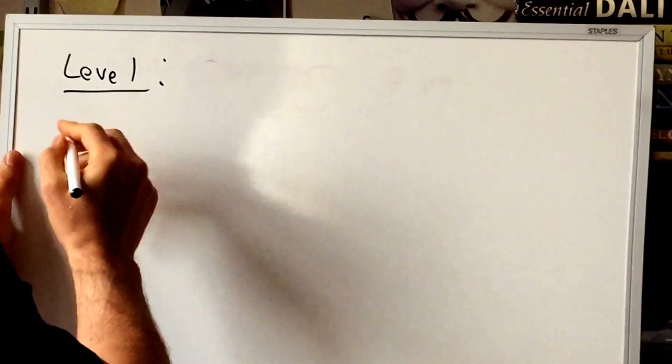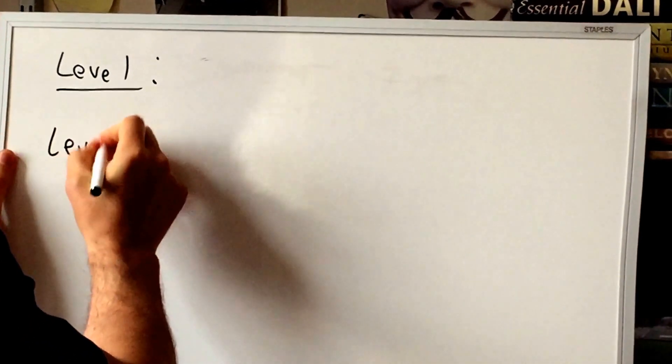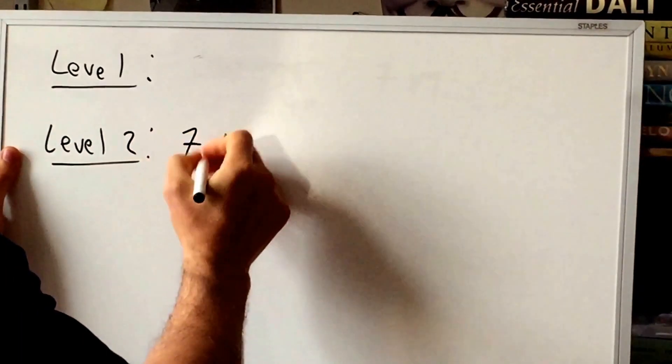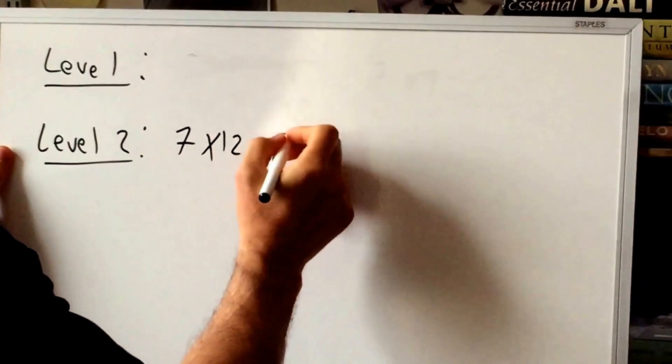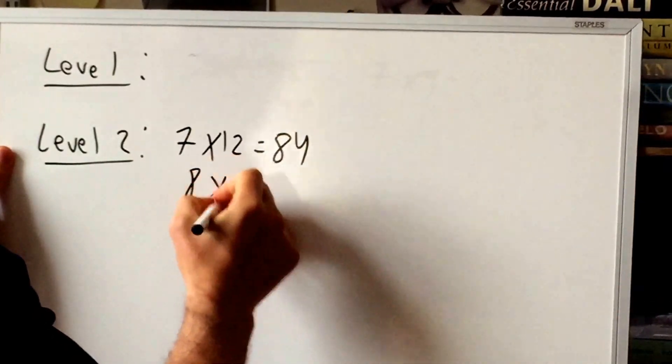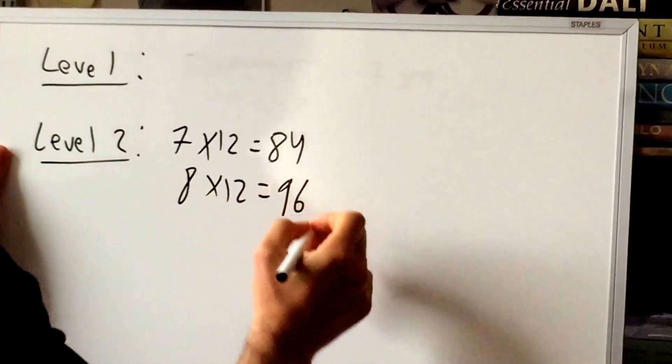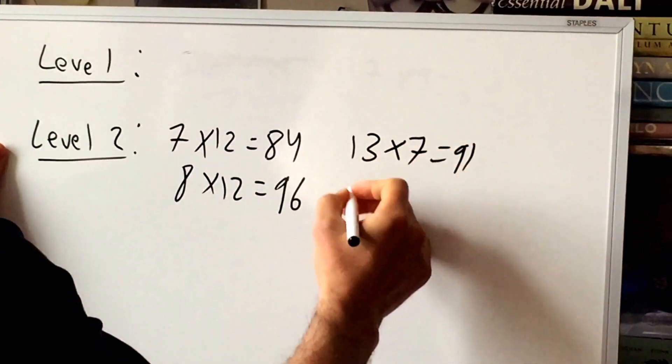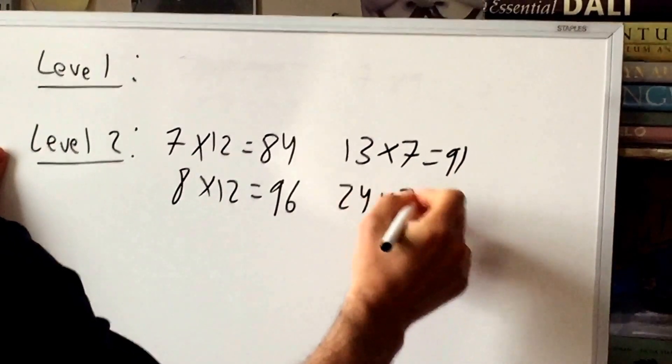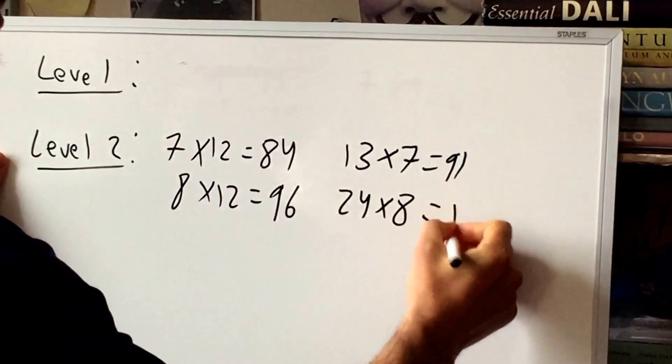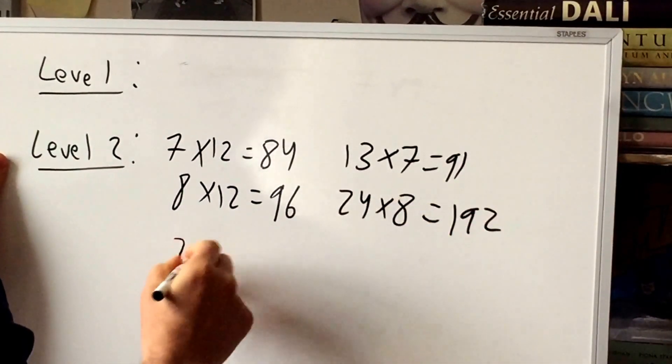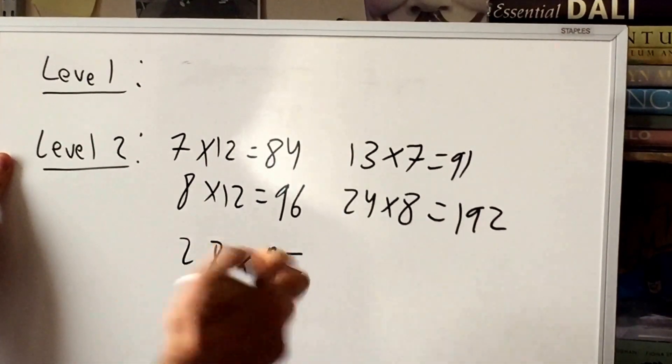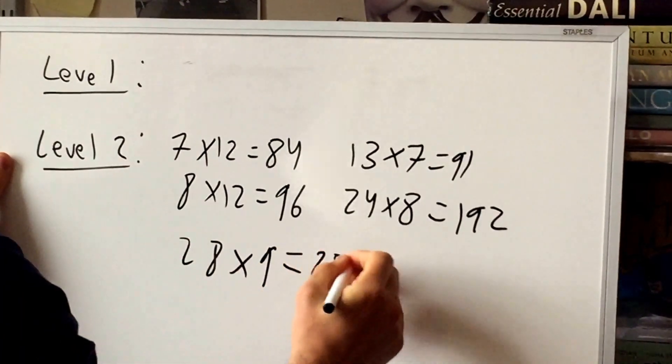Now, let's go to level two. Not much harder. So let's do seven times twelve, 84. Let's do eight times twelve, 96. Let's do thirteen times seven, 91. Twenty-four times eight, that's 160 and 32, 192. Twenty-eight and nine, that's 180 and 72, that's 252.